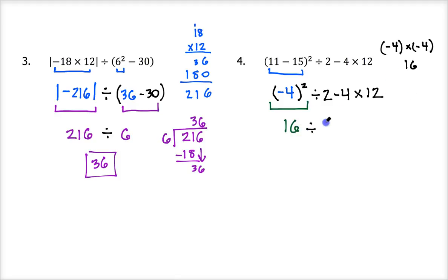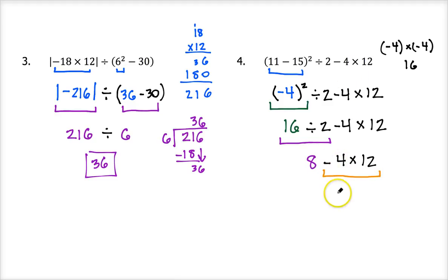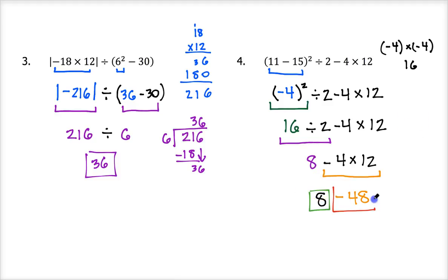Now we're done with grouping symbols and exponents, so we look for multiplication and division from left to right. I see division first: 16 divided by 2 is 8. So this is 8 minus 4 times 12. Next I see multiplication — this is negative 4 times 12; remember to include that minus sign in front of the 4. That's negative 48. Bringing down the 8, we have 8 minus 48: a positive 8 subtract 48 gives us negative 40 for this answer.